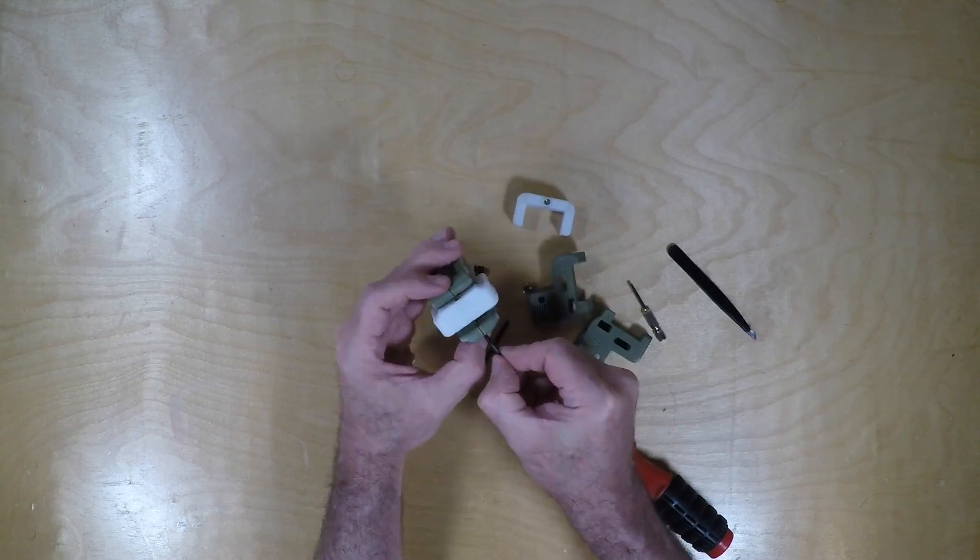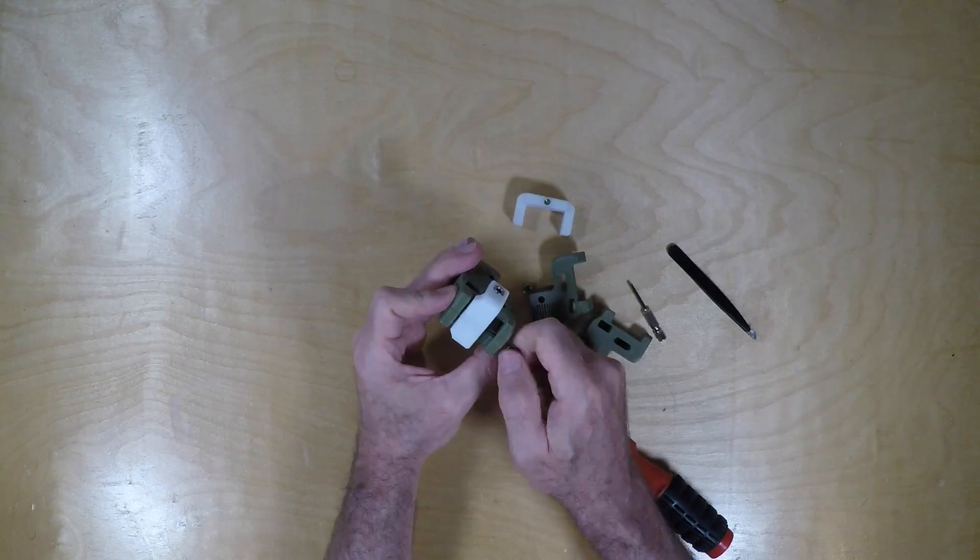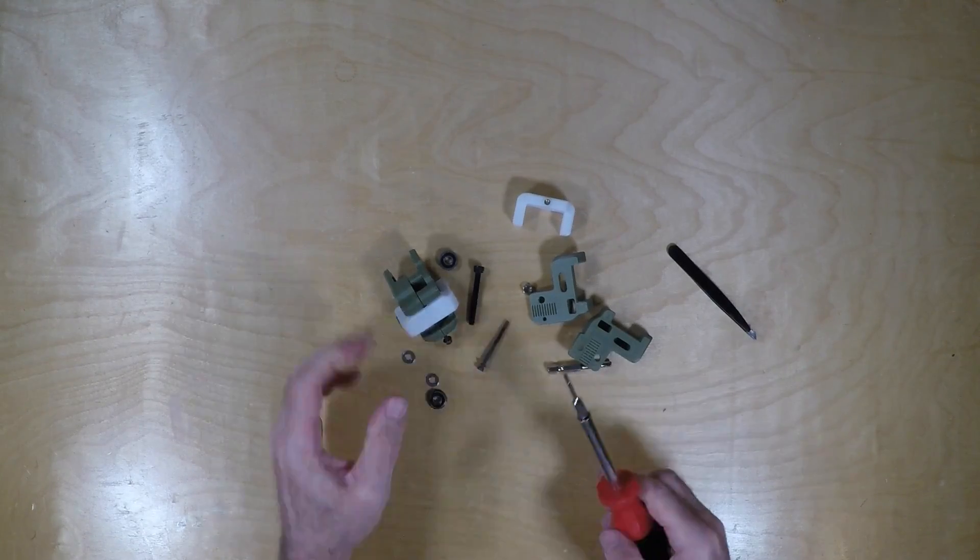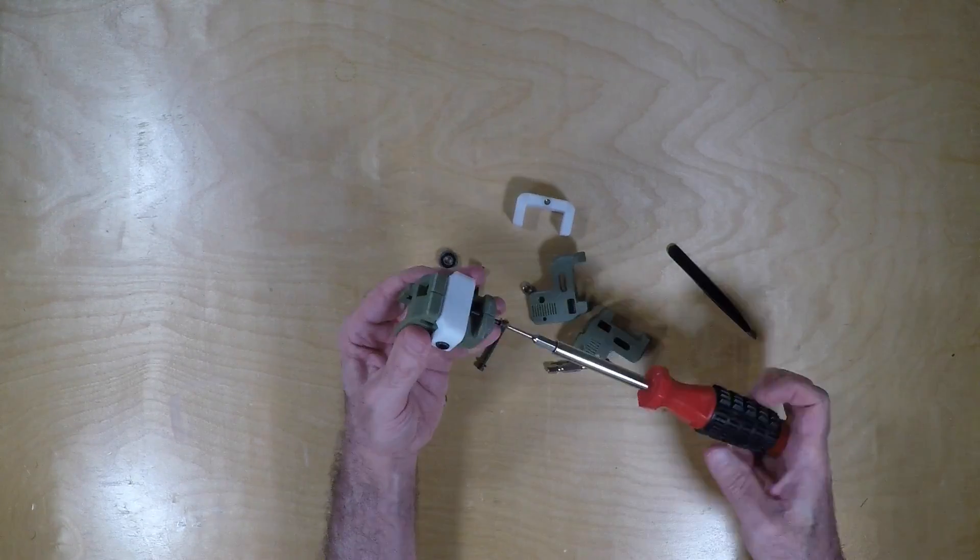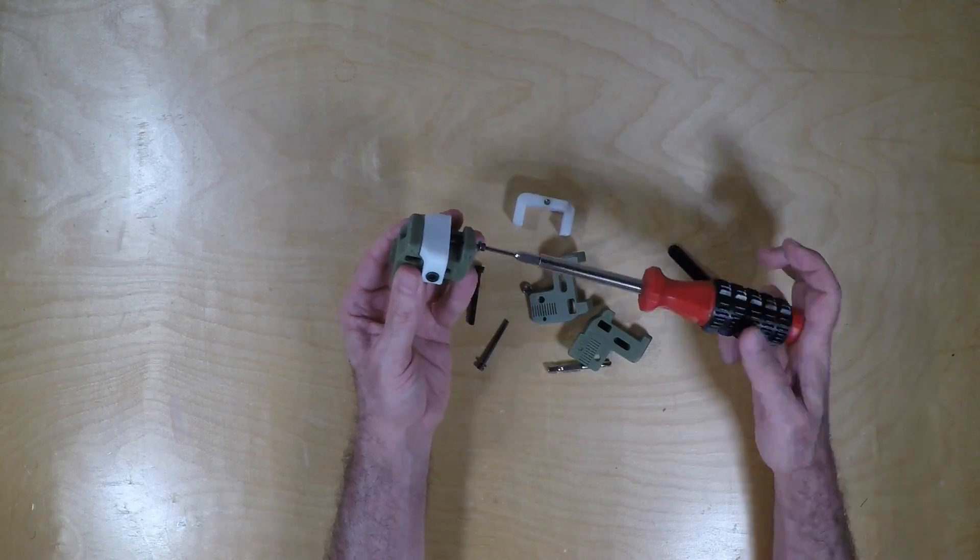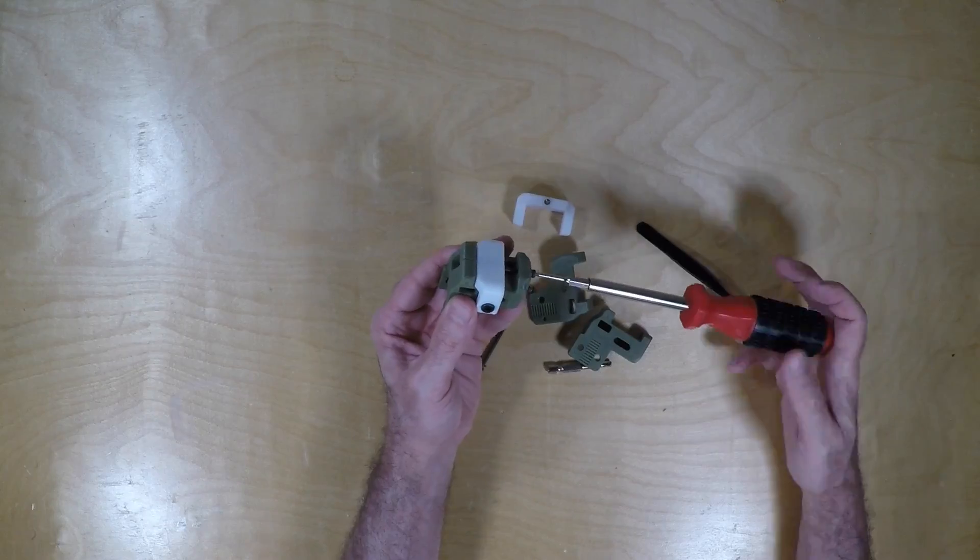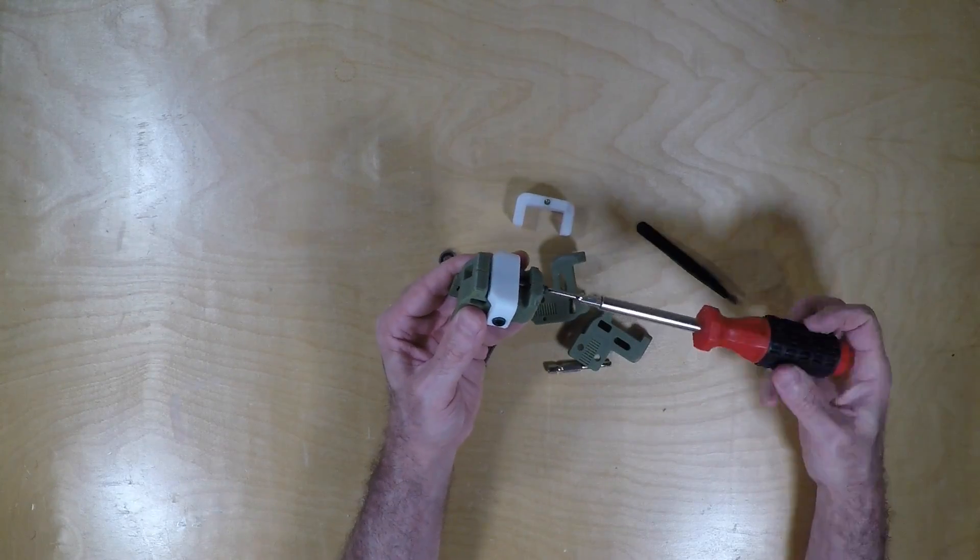Next we'll add the M3x40 tensioner screws, and these simply fit in through the front of the idler. It may take a little bit until these catch onto the plastic, and they are long screws, so this may take a little bit as well.